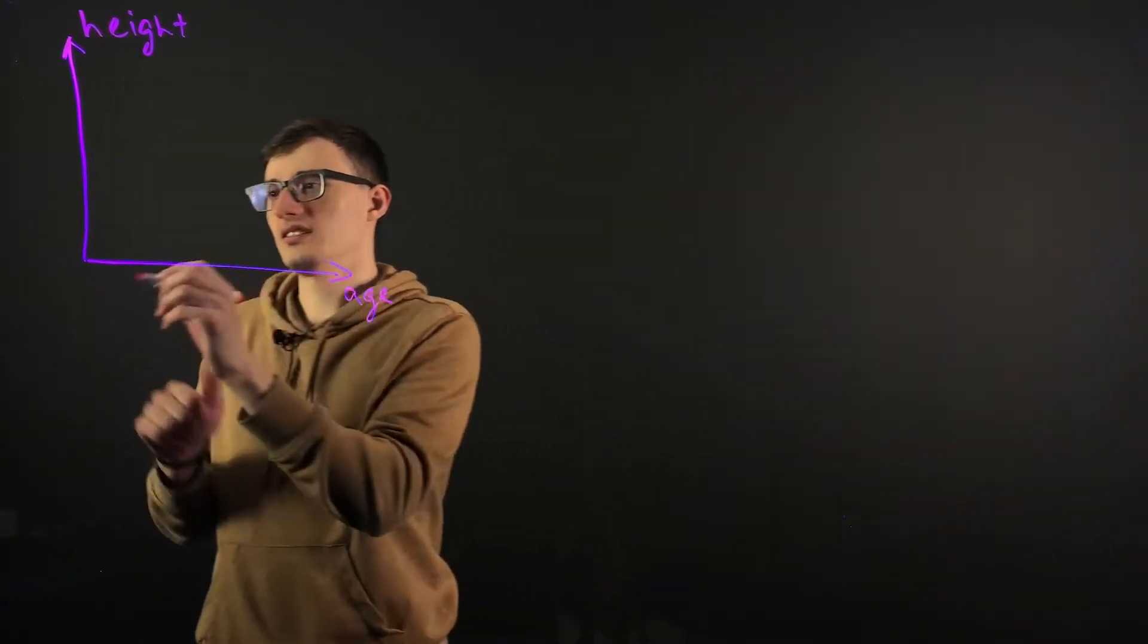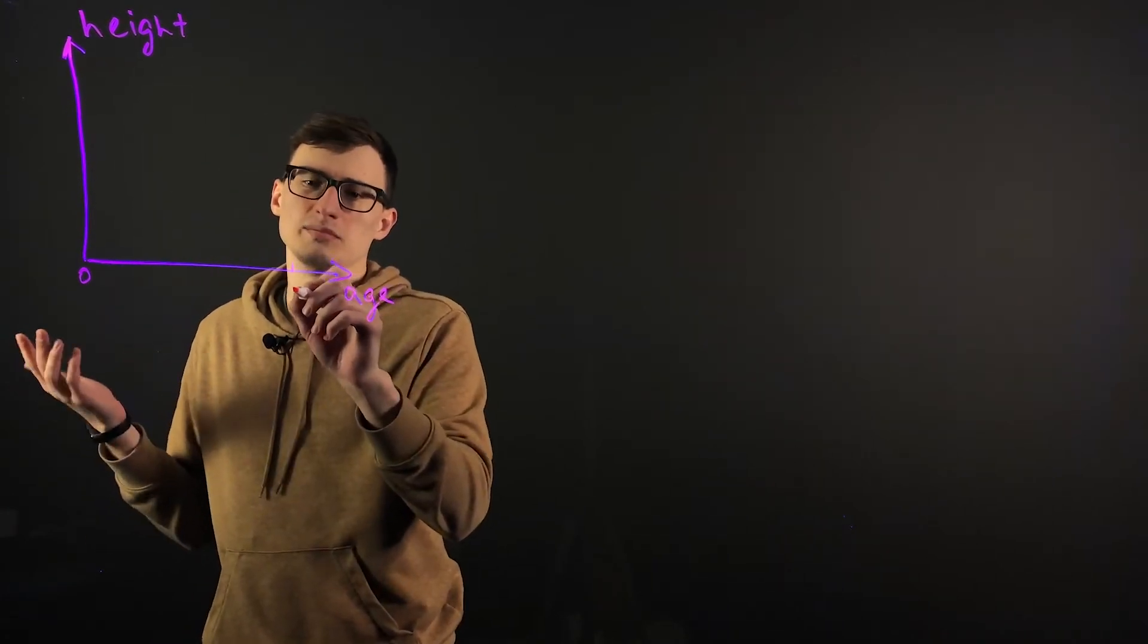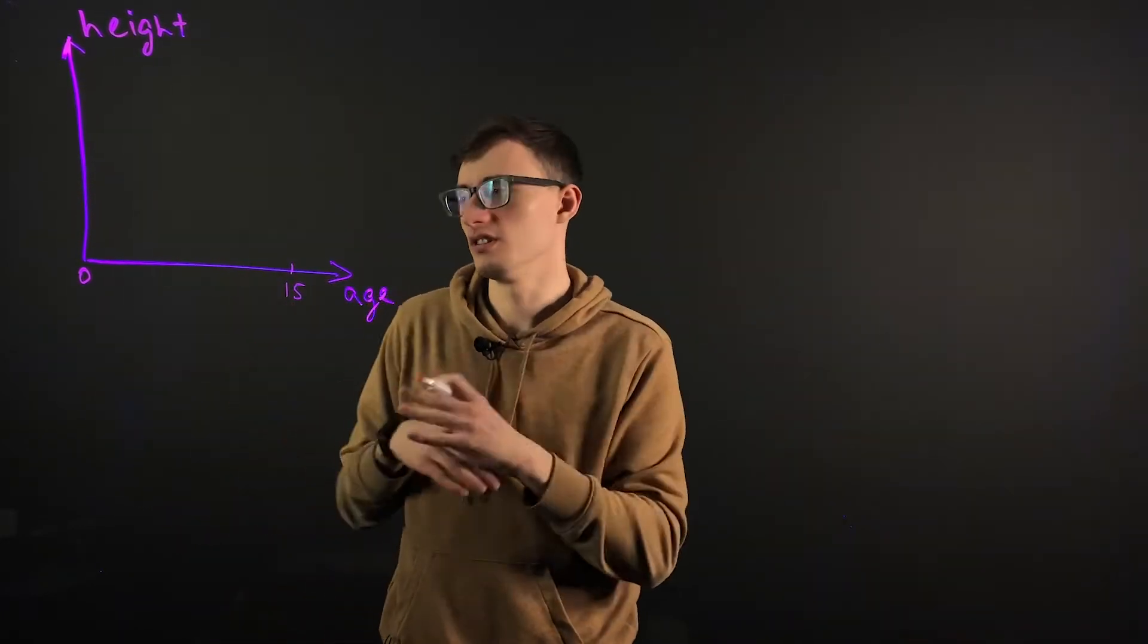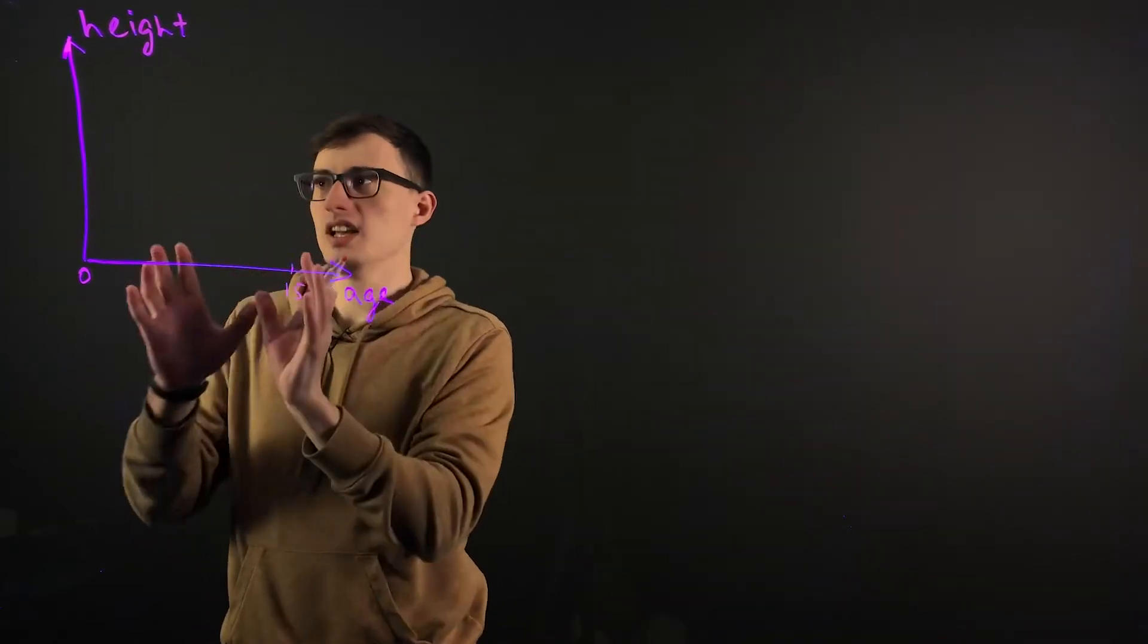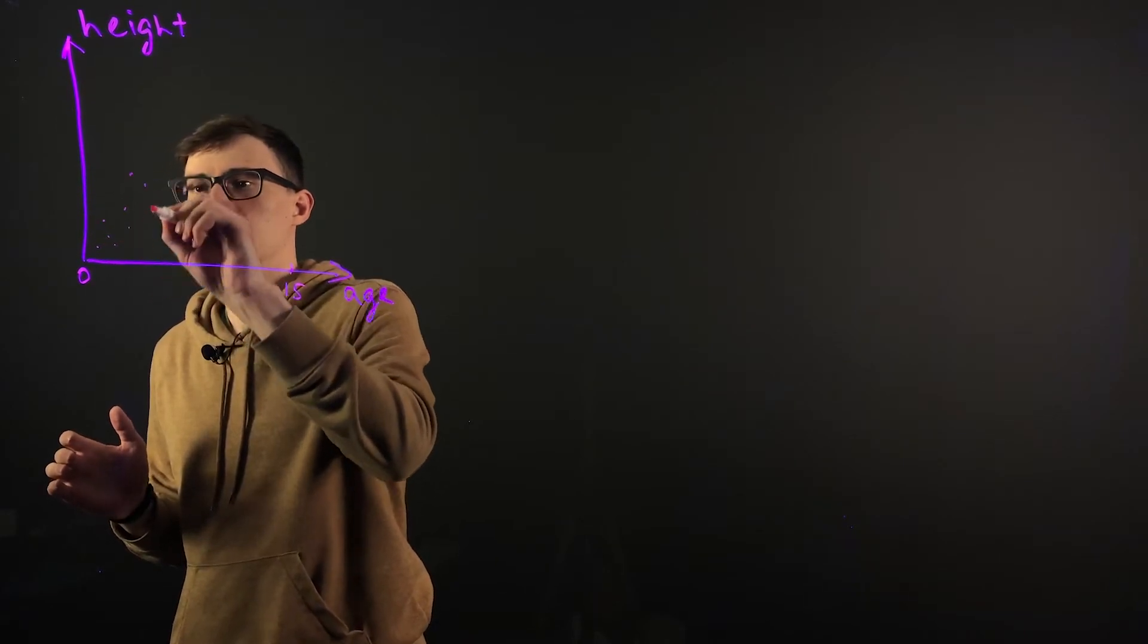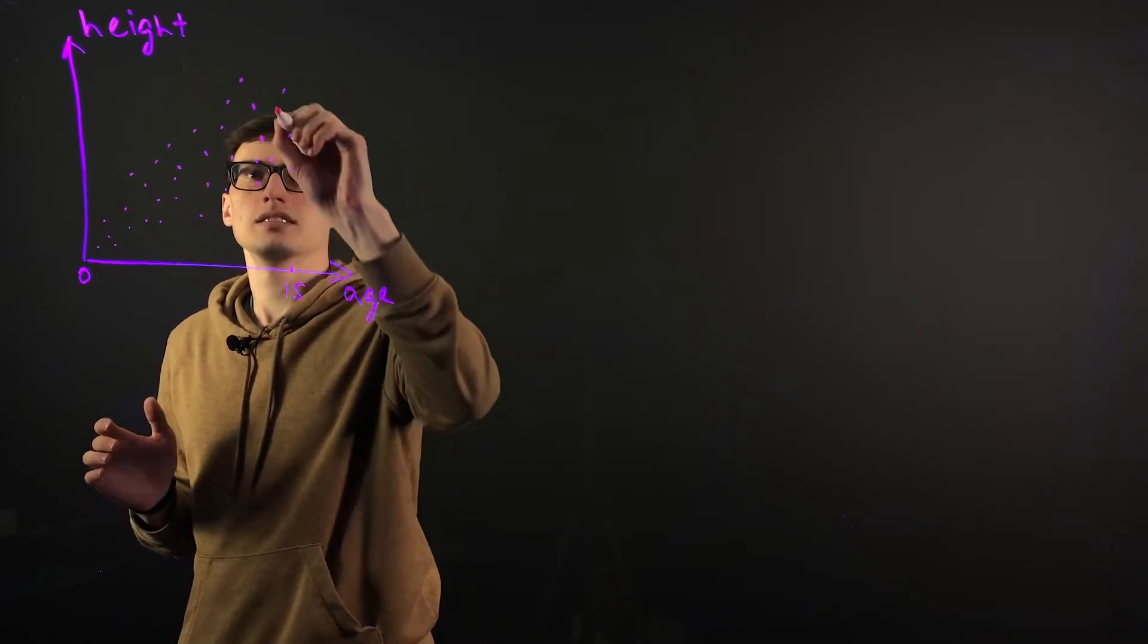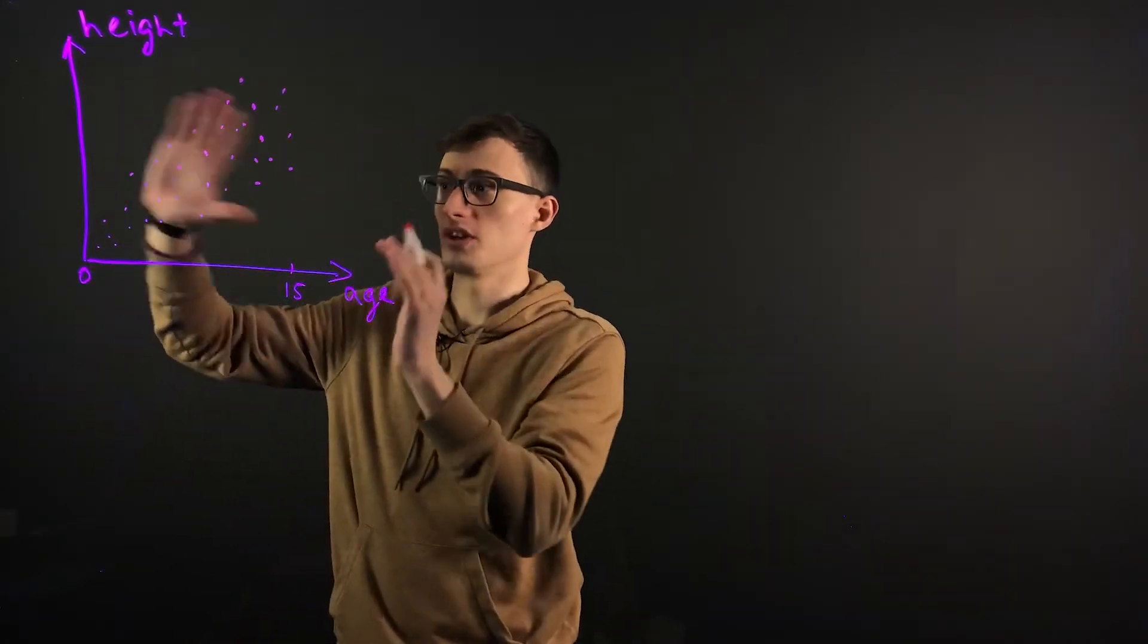Now for the sake of this example, let's say that the age starts off at zero and will only go to about 15, like when people start to stop growing. And we take a sample of a bunch of people, and we plot everybody's age against everybody's height, and we'll get something like this. We have a whole bunch of random dots, and it will look something like this, because obviously as you get older you become taller.